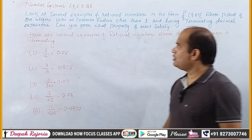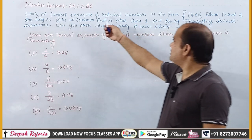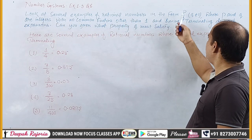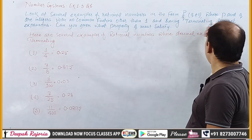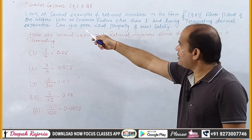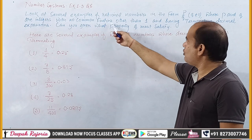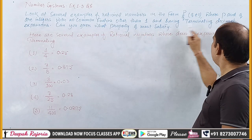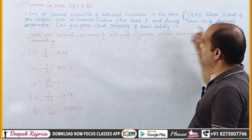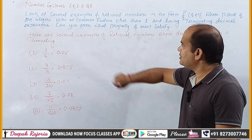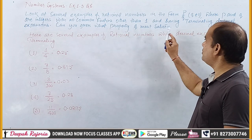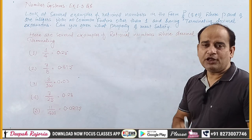In the question, we have been asked: look at several examples of rational numbers in the form P upon Q, where P and Q are integers with no common factor other than 1, and having terminating decimal expansions. Can you guess what property Q must satisfy?